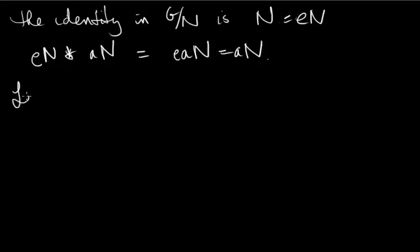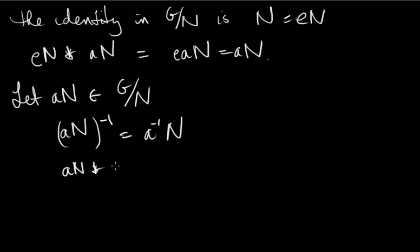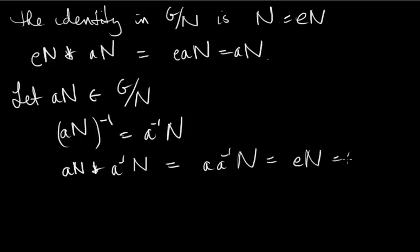We need inverses. Let AN be any coset — any element in the factor group. The inverse of AN with respect to operation star is going to be the coset containing A inverse in G. Because AN star A-inverse N equals AA-inverse N, which is EN, which is N, our identity. So we have inverses.